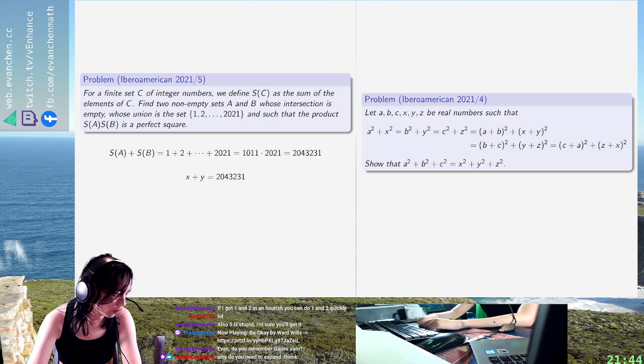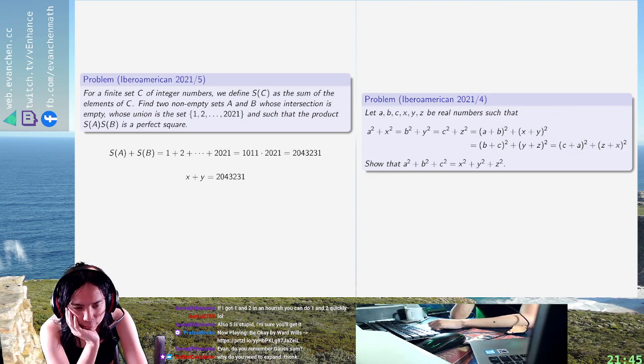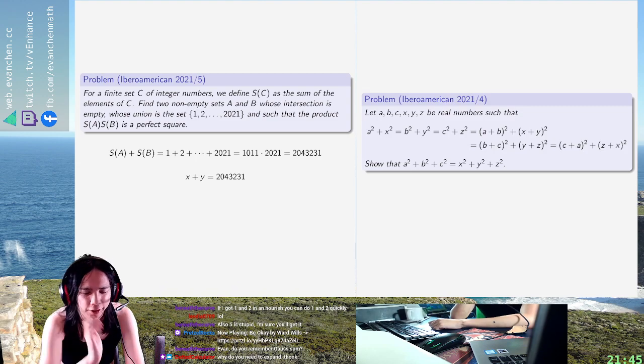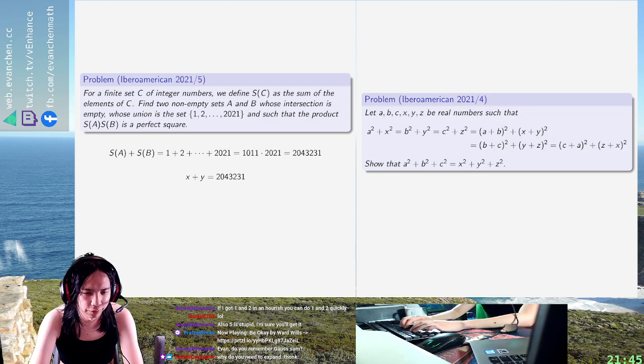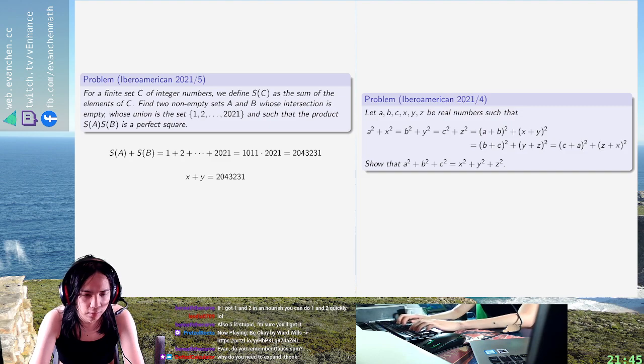This number is so large. The number is so big, okay we're going to factor it. Does 1011 factor? Yes it's divisible by three. It's 337 prime, I have no idea. What's 2021? Is that alright?